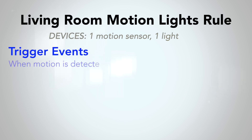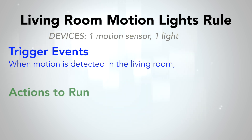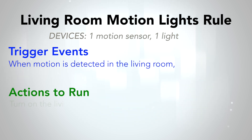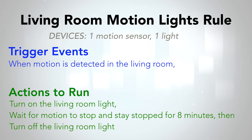Here's the rule. The trigger event is motion detected on our living room sensor. The actions to run when the rule is triggered are to turn on the living room light, wait for motion to stop, then turn off the light. In layman's terms, when motion is detected the light will go on. When motion stops, the light goes off. Pretty basic stuff.